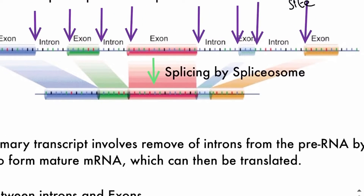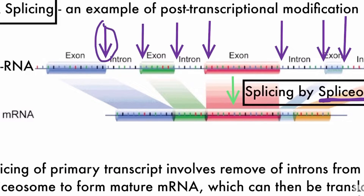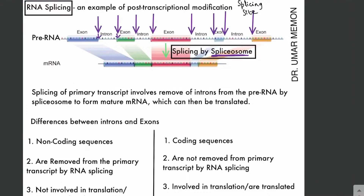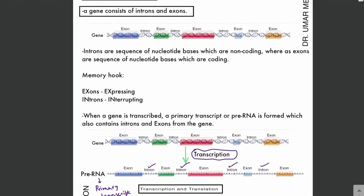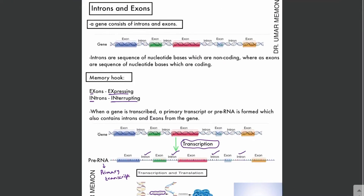Splicing is done by a complex of RNA and protein called the spliceosome, which carries out splicing at specific splicing sites. By splicing, a mature messenger RNA is formed which can then be translated. A helpful memory hook: exons are 'expressing' — they are coding sequences — whereas introns are 'interrupting' — they do not code for any protein.